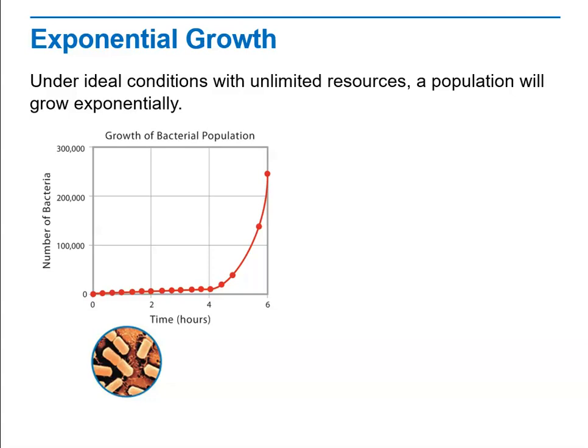So after one day, because of this exponential growth — and if you look at this graph you can see that after a certain point the growth really takes off — after one day this bacterial population will grow to be 4,720,000 followed by 15 zeros. It'll be a huge, uncountable population. If this growth continued without slowing down, then in a few days this bacterial population would cover the entire planet.